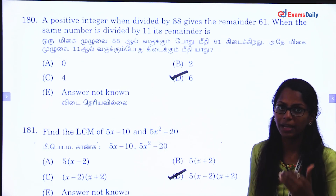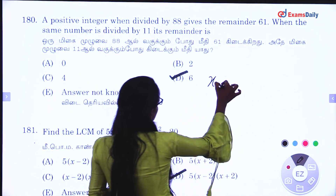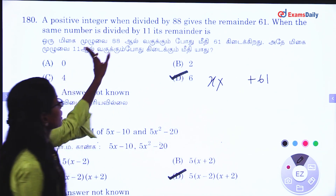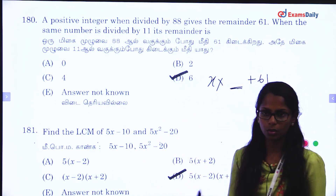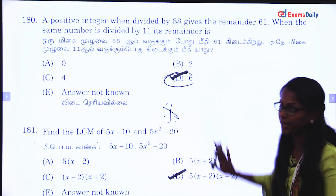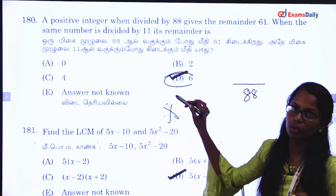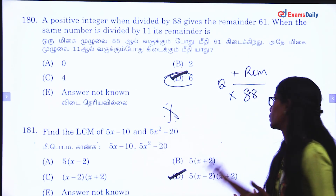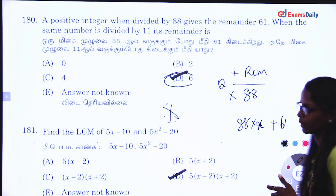Next question. A positive integer divided by 88 gives a remainder of 61. Write the mixed fraction as: x into 88 plus 61. When the same number is divided by 11, find the remainder. So 88 divided gives a quotient; we use a remainder. The equation becomes x plus 11, and then plus 11 asks 61. It's the same equation.